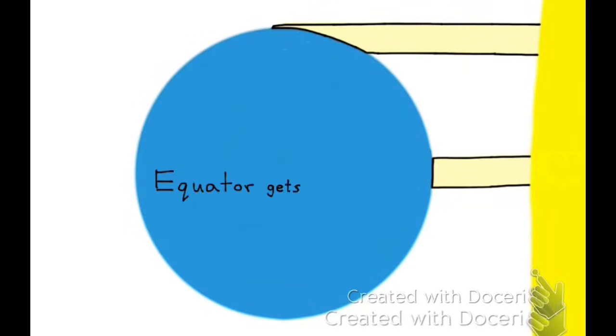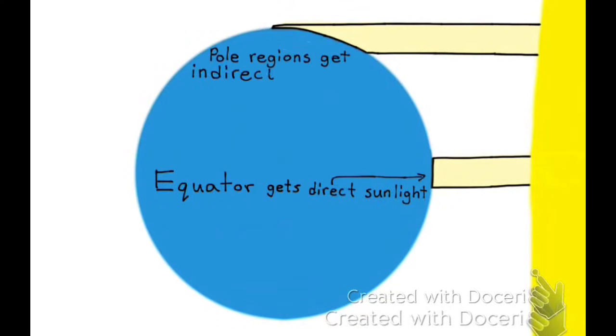Because of the shape of Earth, the sun rays are more focused at the equator than they are at the poles. The angle at the poles is so great that the sunlight is spread out across a larger area compared to the smaller area at the equator. The equator has a much more focused and intense sunlight compared to the poles, where the light is spread out and less intense.